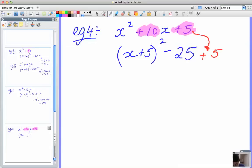And we're going to say that the final answer is x plus 5 squared. And minus 25 plus 5 is equal to minus 20. And there's my answer. All right. Let me write down a couple of questions for you to try out.